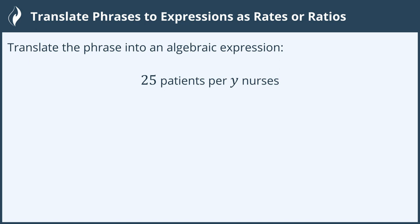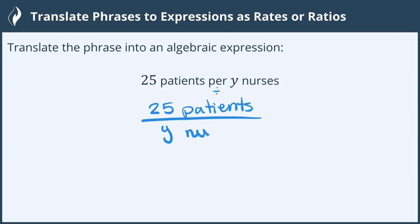Per means divide. This means we have 25 patients per, or divided by, y amount of nurses.